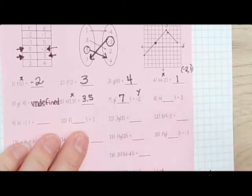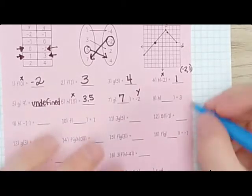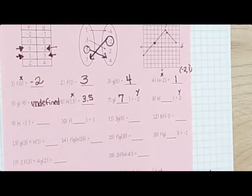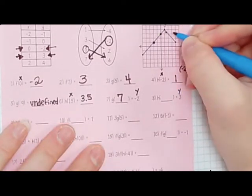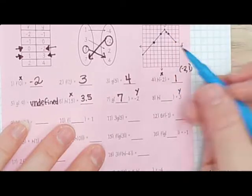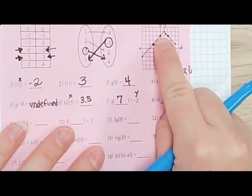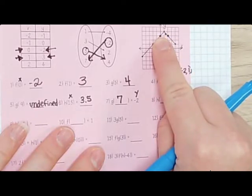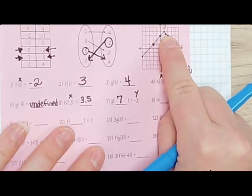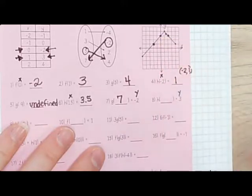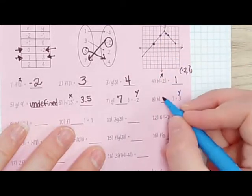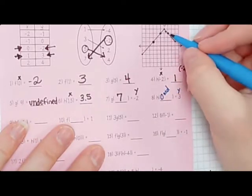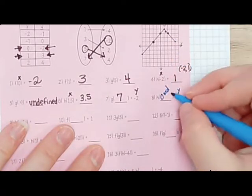Number 8: h of something gives us 3. That means the y-value is 3. So go on the y-axis to 3. It actually goes through y = 3 in two different places — y is also 3 on that one. So there are two answers: 0 and 2.